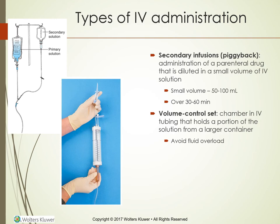Secondary infusions, or piggybacks as they are called, are administrations of a parenteral drug diluted in a small volume of IV solution. The small volume is usually 50 to 100 milliliters and you run it over 30 to 60 minutes. The volume control set is a chamber in the IV tubing that holds a portion of the solution, also run over 30 to 60 minutes, as a secondary infusion of medication from a larger container. You avoid fluid overload this way. We often give medications this way and also use this in pediatrics.